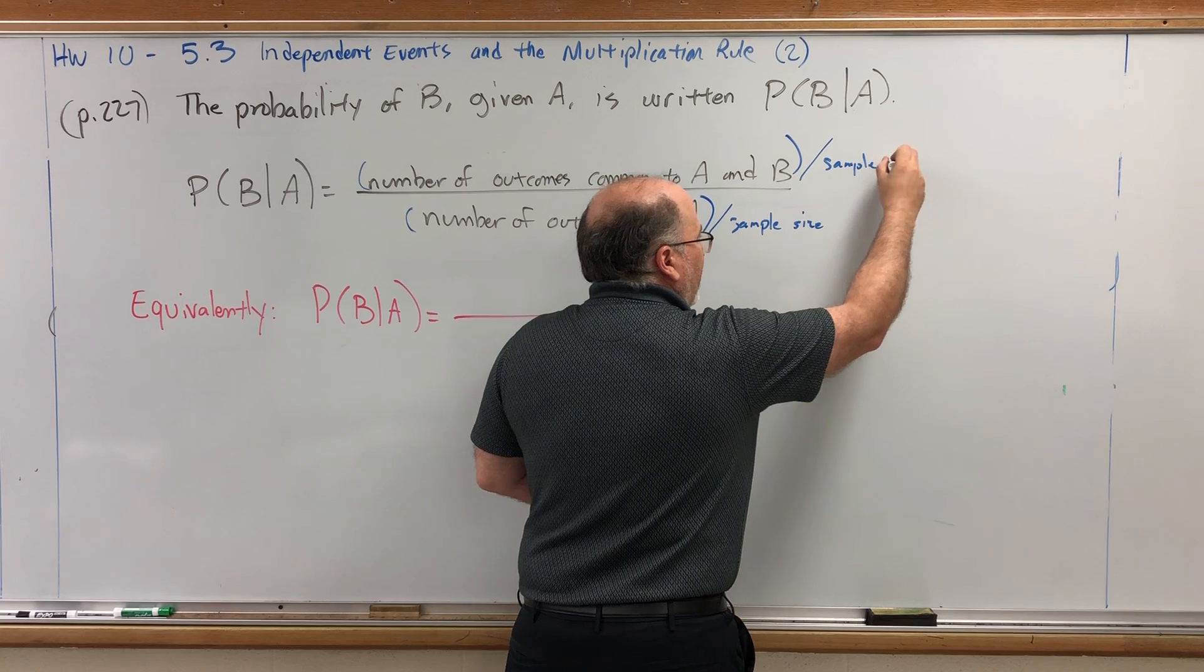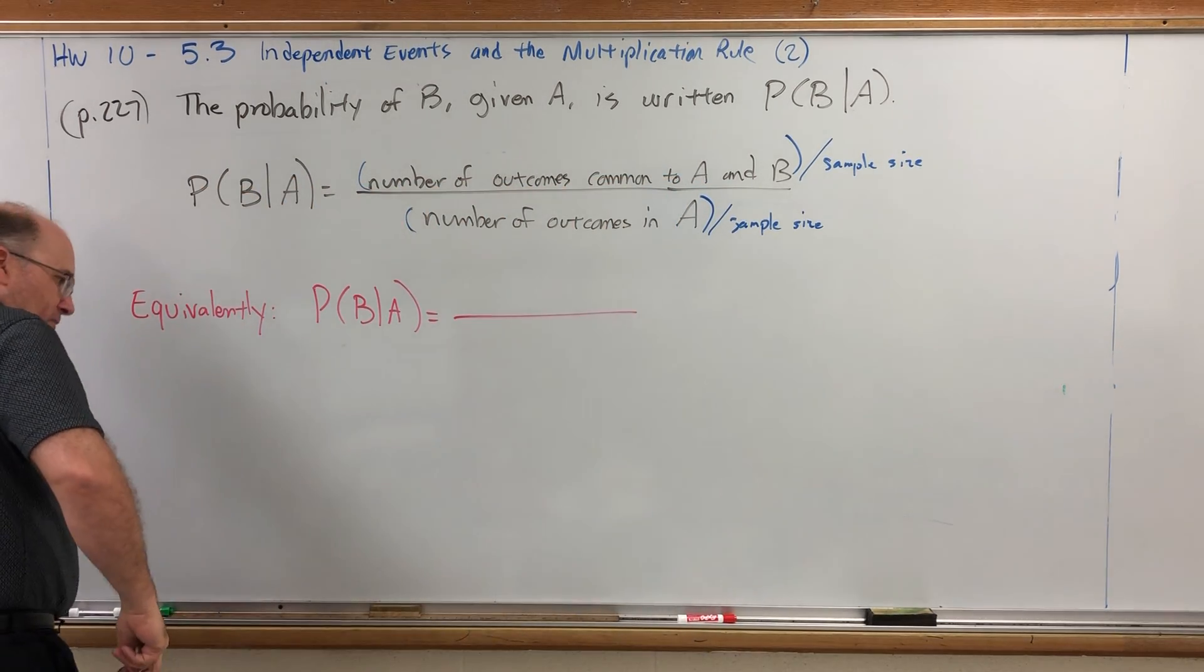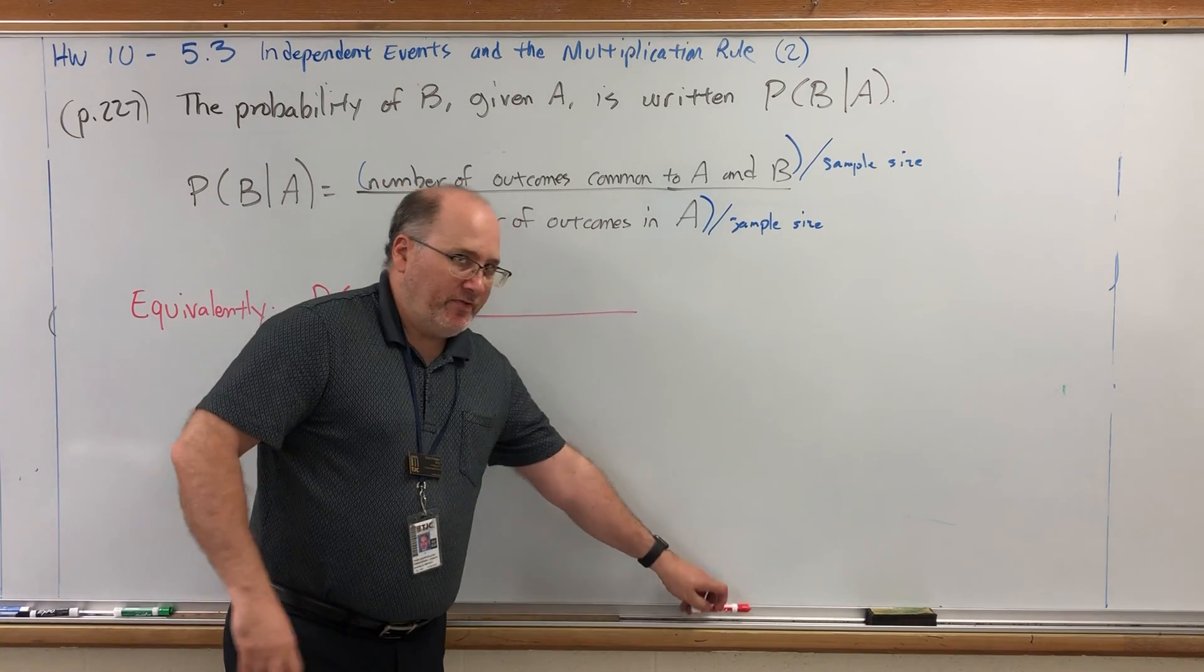Let's take this definition and divide both sides of the fraction by the sample size. In the previous problem, the sample size is 1,000. Now, why would I want to do that? Well, now look at both sides of the big fraction.